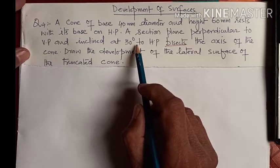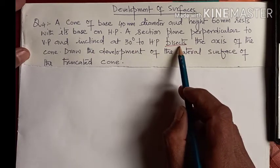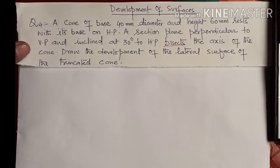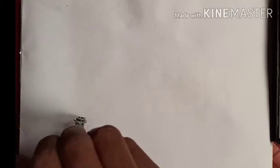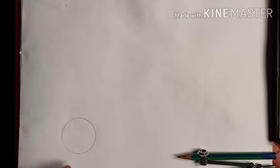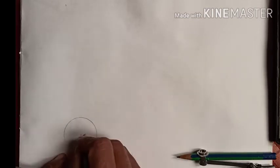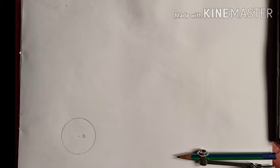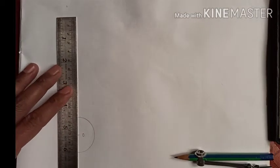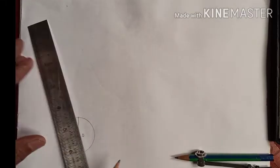A sectional plane is cutting the cone at 30 degrees at the bisecting point of the axis. The diameter of the cone is 40mm, so we'll take its radius in the top view. We'll open up the compass and draw a circle whose diameter is 40mm, mark its center as O, then divide the circle into eight equal parts.